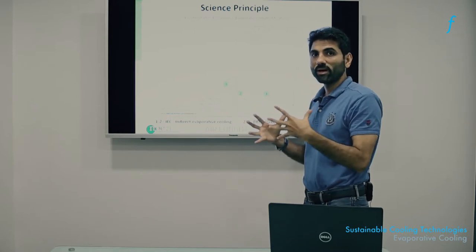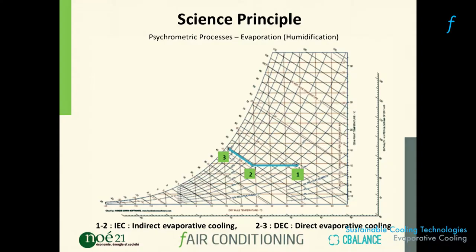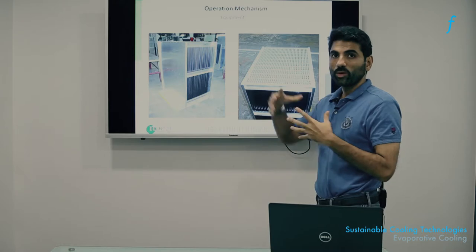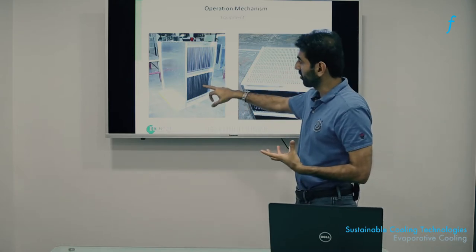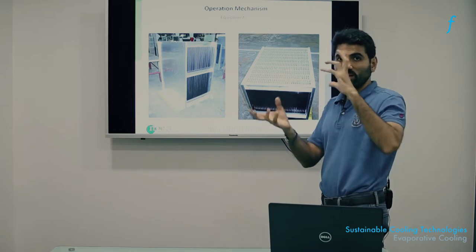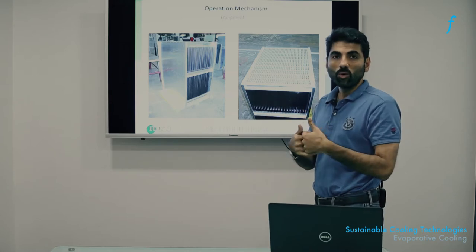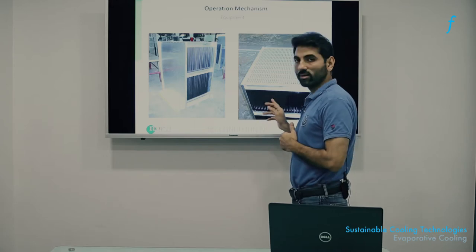The heat exchange unit that performs indirect evaporative cooling looks very different from the cellulose pad used in direct evaporative cooling. In this unit, what makes thermal contact is not water and air directly, but two air streams separated by a thin wall — one stream is the evaporatively cooled secondary air, and the other is the warm primary air from outside. This thermal contact without mass transfer is what makes indirect evaporative cooling unique.